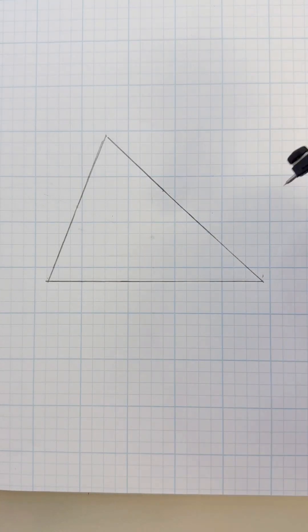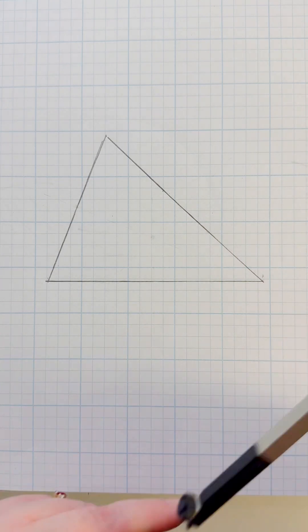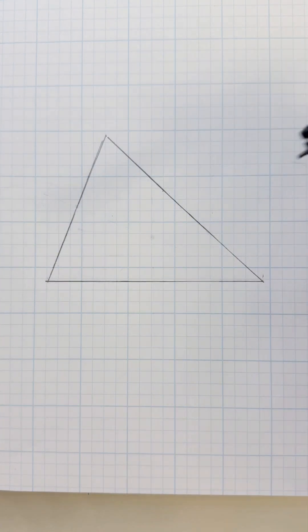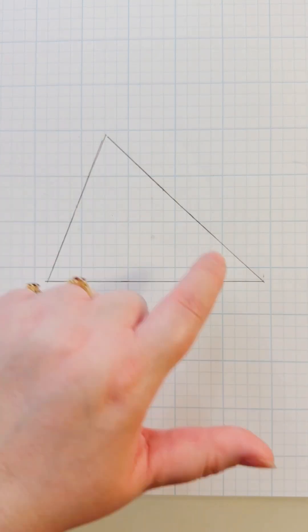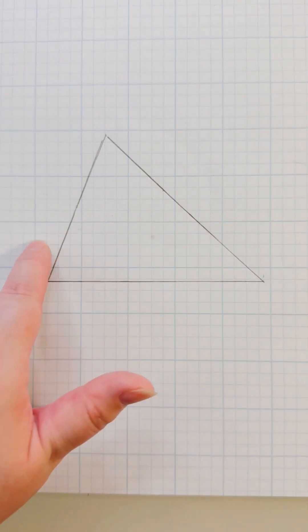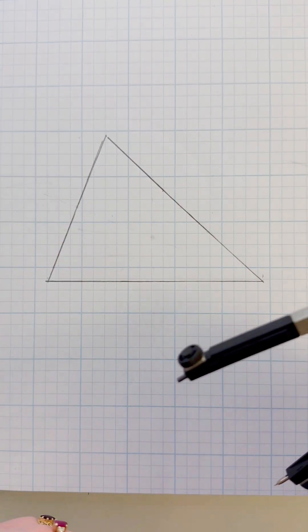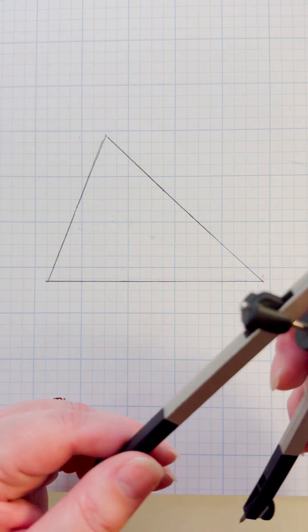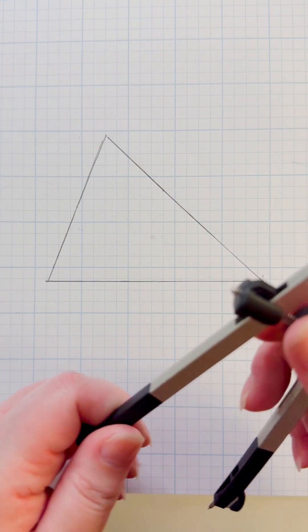All right guys, we're going to find the center of this triangle using a compass. We're going to use the theory of finding the center point of each of these lines. I have another video that shows you how to do that, but I'm going to go through it quickly on this one because I don't want this to be a long video.